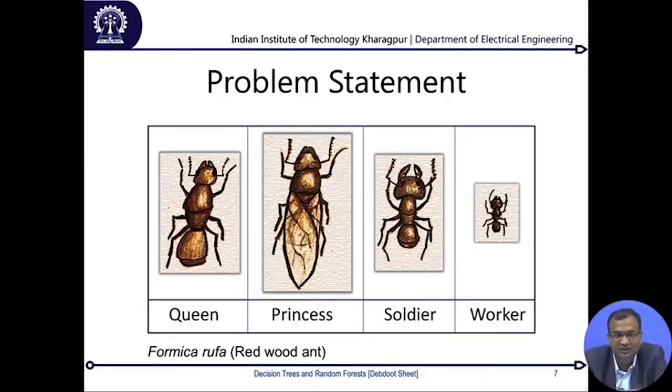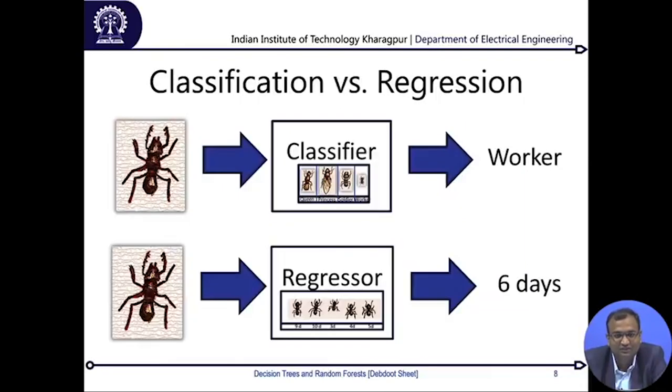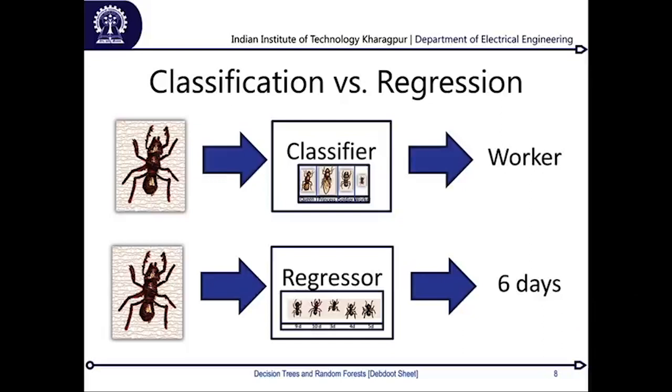To an inexperienced eye, ants are just ants, but they can be workers, soldiers — the most furious ones that bite — princesses, which you rarely find, and the queen, which is even rarer. Taking two typical scenarios: the first is a classification scenario — given an image of an ant, find out what kind of ant it is. The second is regression — given an image, find out the age of the ant, which is a continuous variable. That is the distinction between classification and regression.